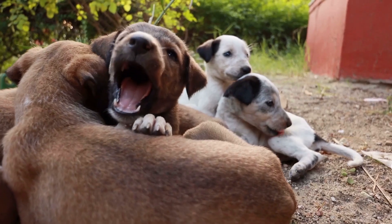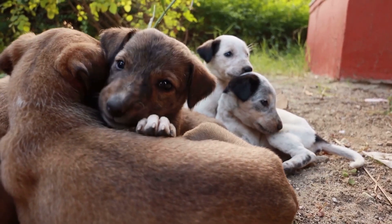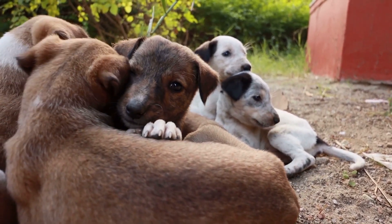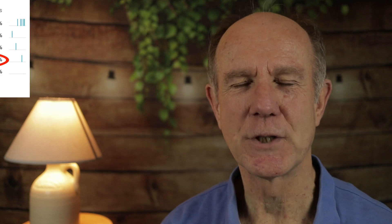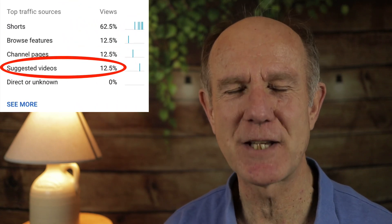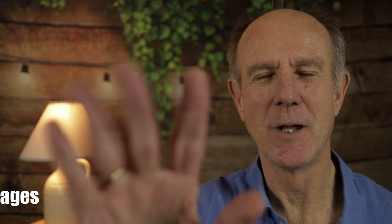Suggested videos will also appear based upon a viewer's watch history. If you've been watching a lot of puppy videos, then more puppy videos will appear. Use YouTube analytics to view the percentage of traffic you got from suggested videos.